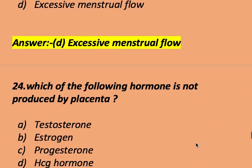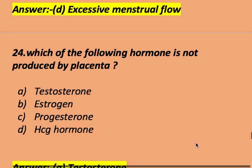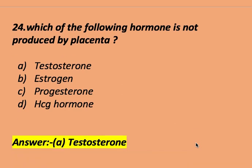Which of the following hormones is not produced by the placenta? Options: testosterone, estrogen, progesterone, or HCG — human chorionic gonadotropin hormone. The right answer is testosterone. Testosterone hormone is not produced by the placenta.